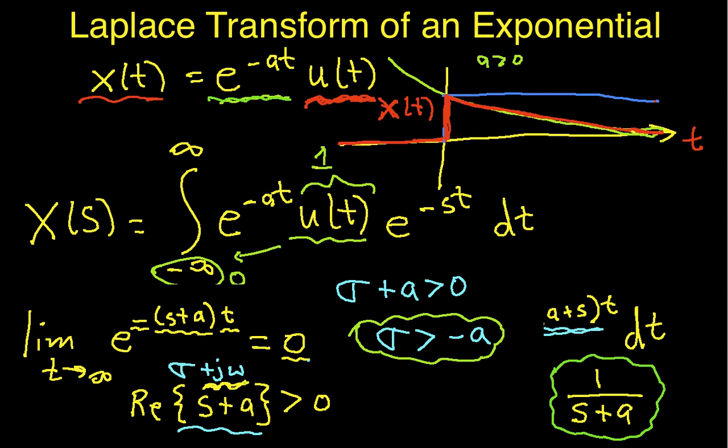So, I have this expression as my region of convergence. If I draw this on the complex plane, this is real and imaginary, I have a value out here of minus a, and the area that I'm looking at as my region of convergence is everywhere where the real part of s is greater than negative a. So, this is my region of convergence.